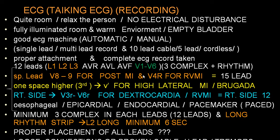For high lateral wall MI, when we suspect it — particularly with ST elevation in Lead 1 and AVL — we place the chest leads one space higher, in the 3rd intercostal space instead of the 4th. Also, in Brugada syndrome, if classical changes are not seen in V1 and V2, the electrodes are placed one space higher — either in the 3rd or 2nd intercostal space — which gives a much better idea and will show good changes in V1, V2, and V3.